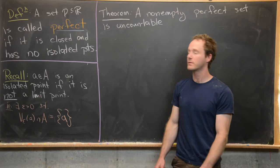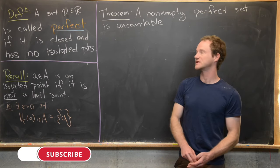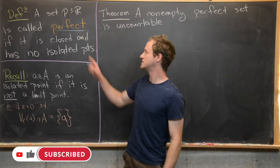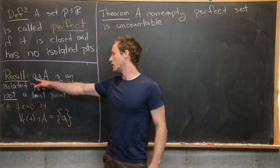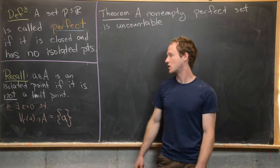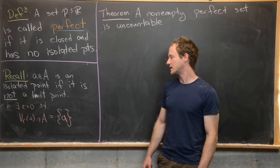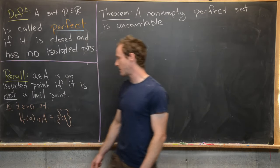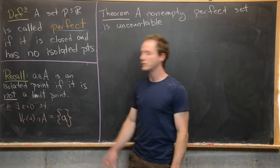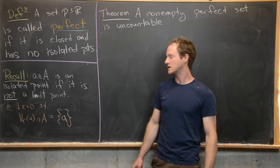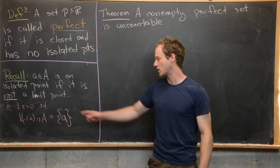We're continuing our study of the topology of the real number line, and here we're going to look at something called a perfect set. A subset P of the real numbers is called perfect if it's closed and has no isolated points. An element A from a set A is called isolated if it is not a limit point of A, or equivalently, there exists some epsilon greater than zero such that the epsilon neighborhood centered at A intersected with A only contains A itself.